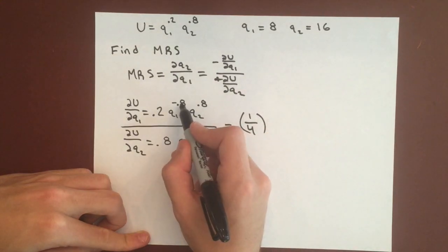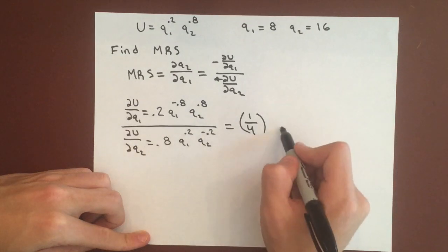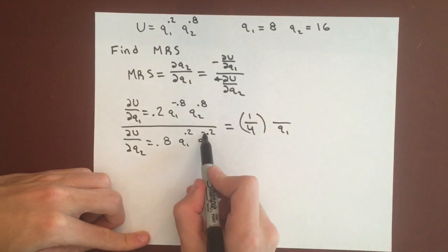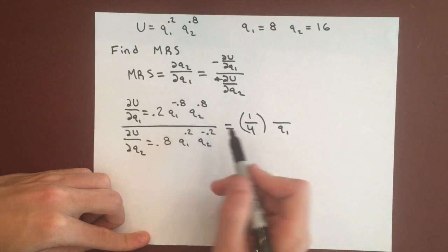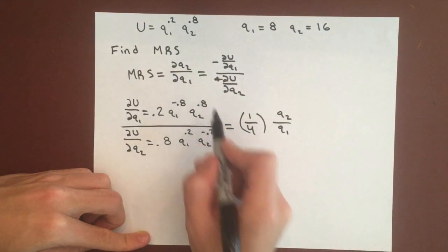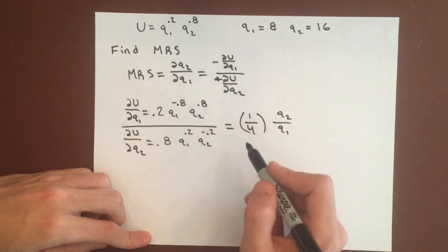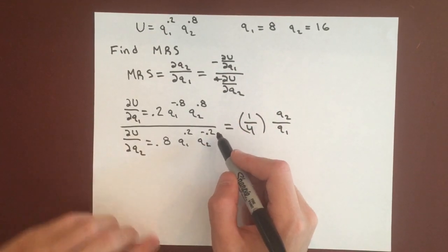And taking this negative 0.8, we can put that in the denominator, so we'll have Q1 in the denominator, and this negative 0.2 means it's in the numerator. So that goes to Q2 with the 0.2 times 0.8, Q2 to the 0.8 times Q2 to the 0.2.